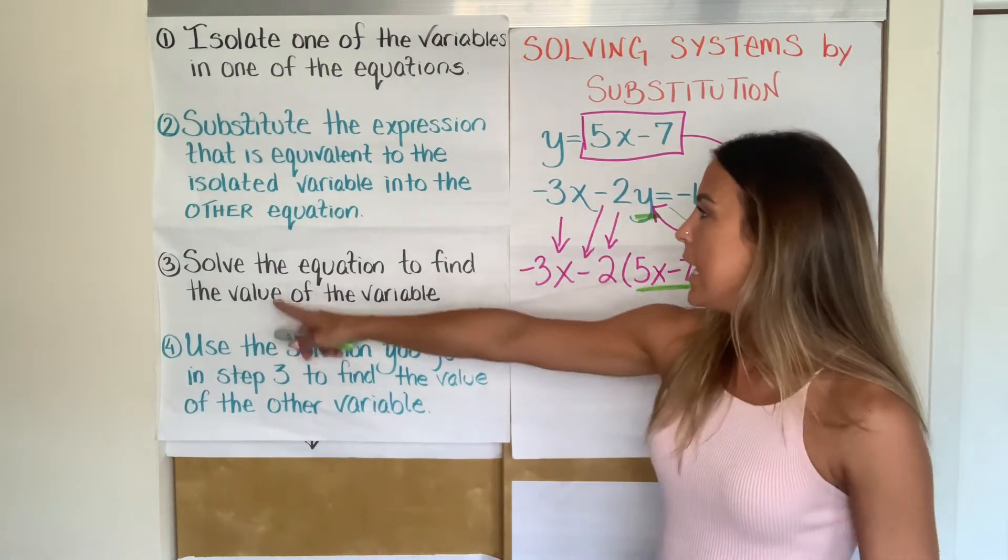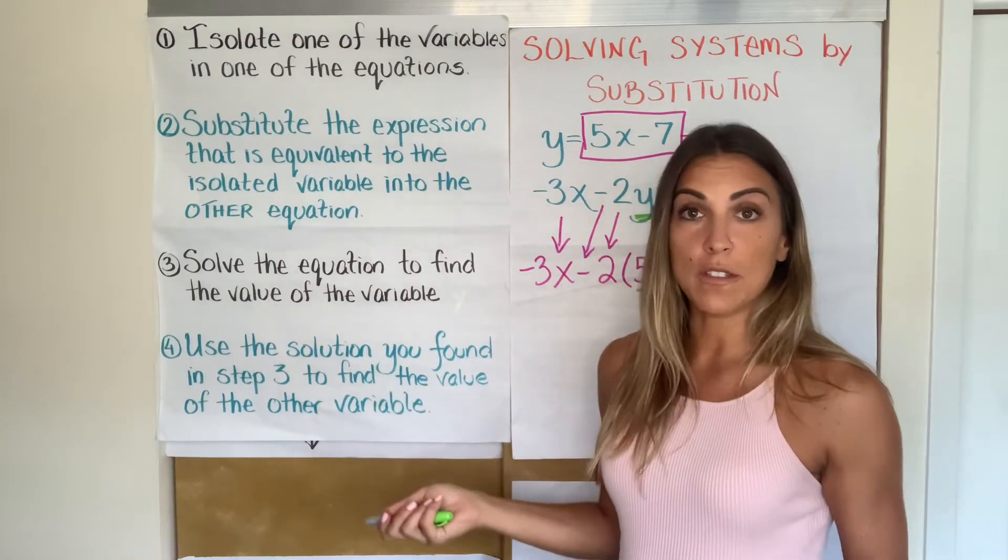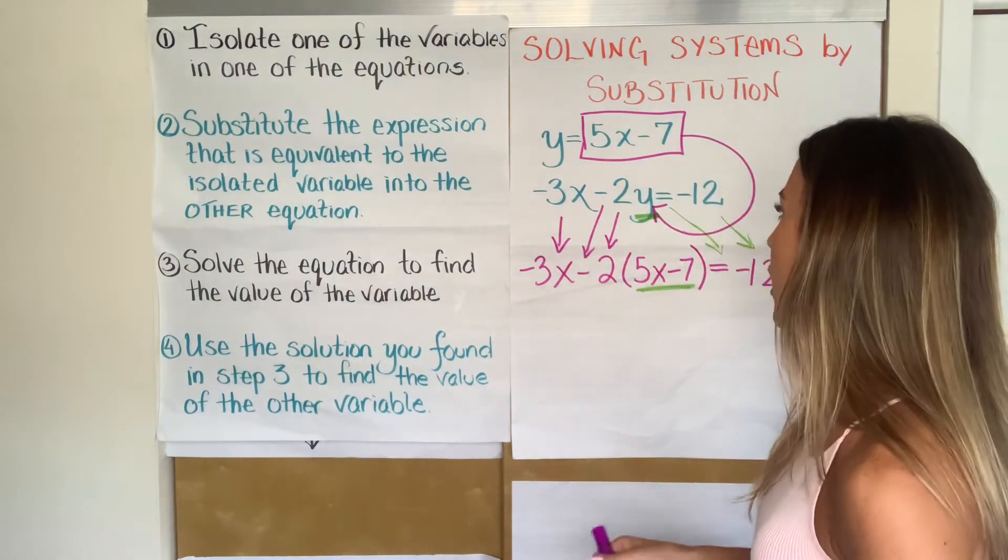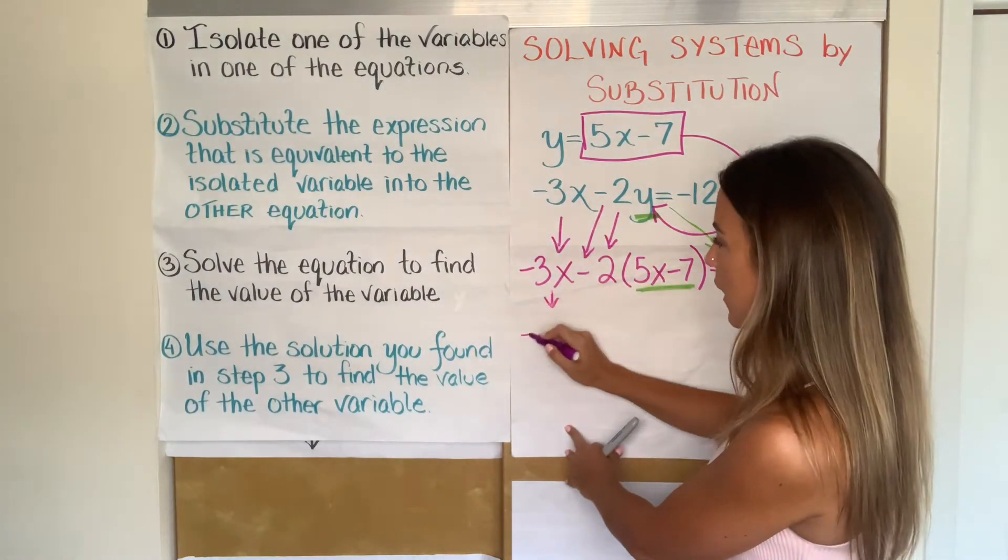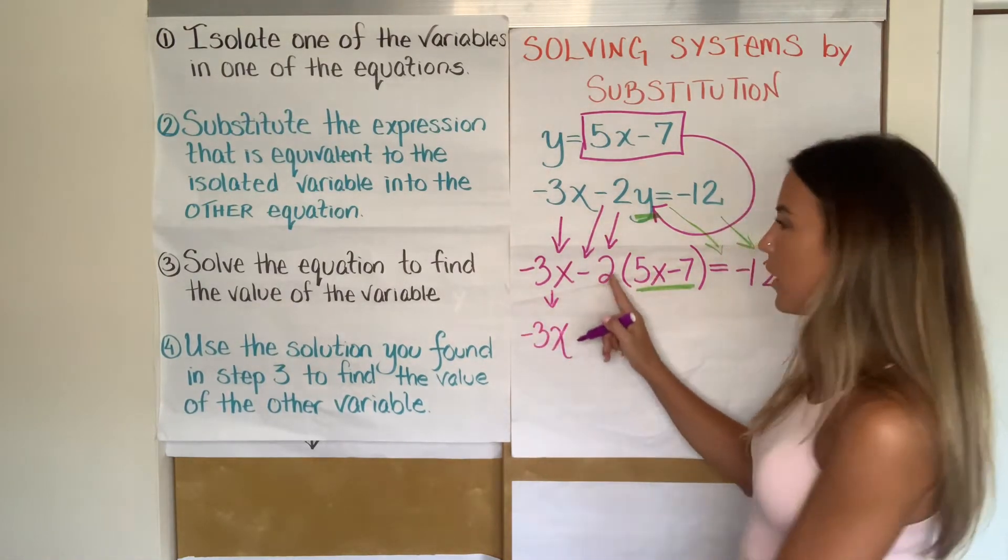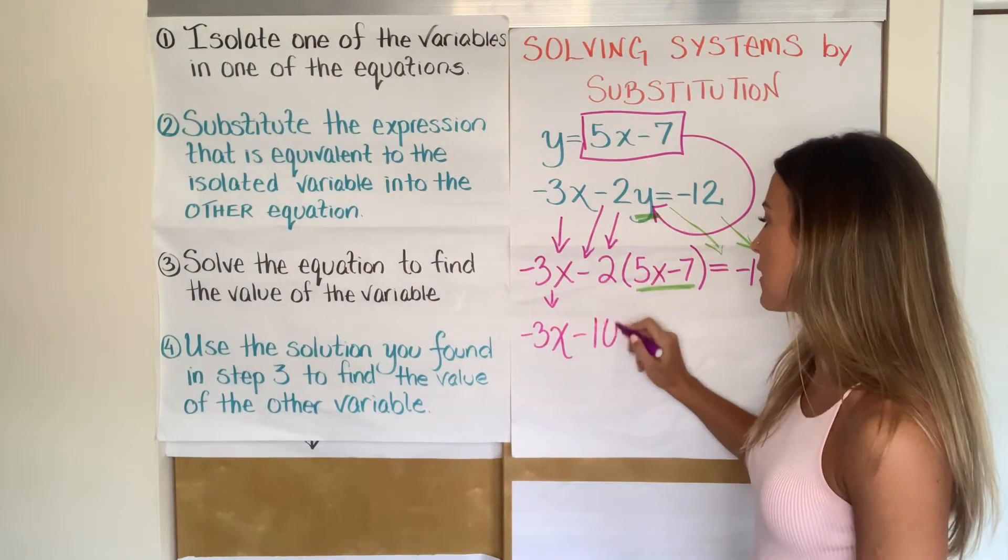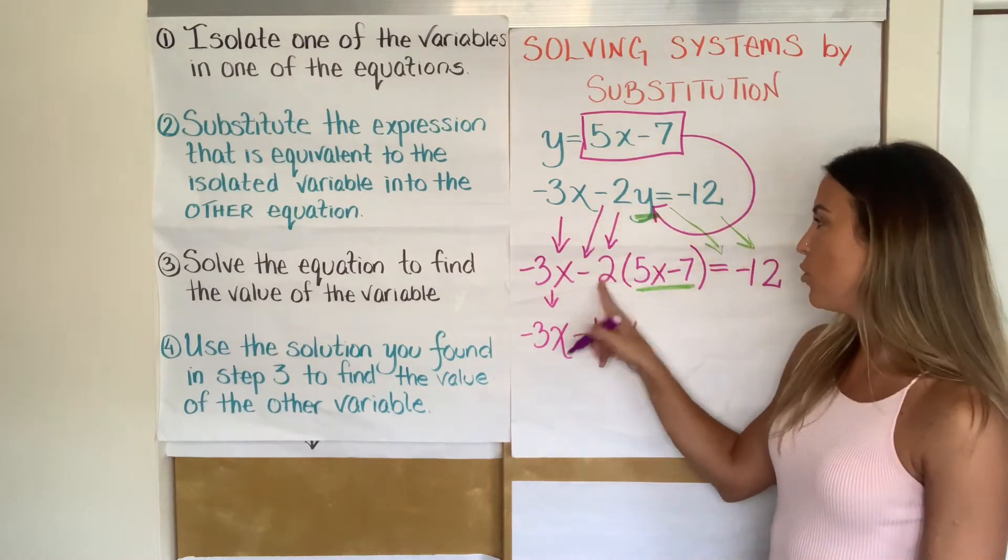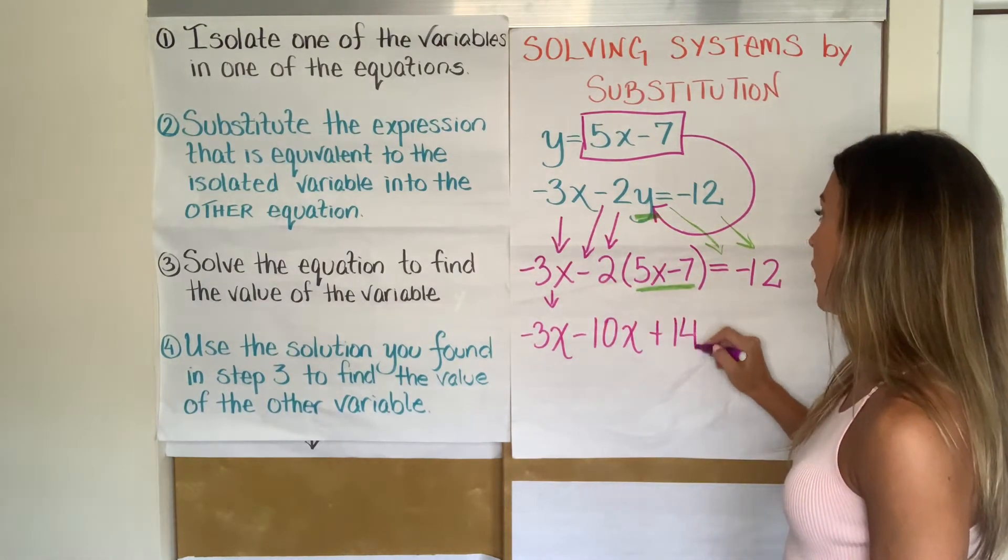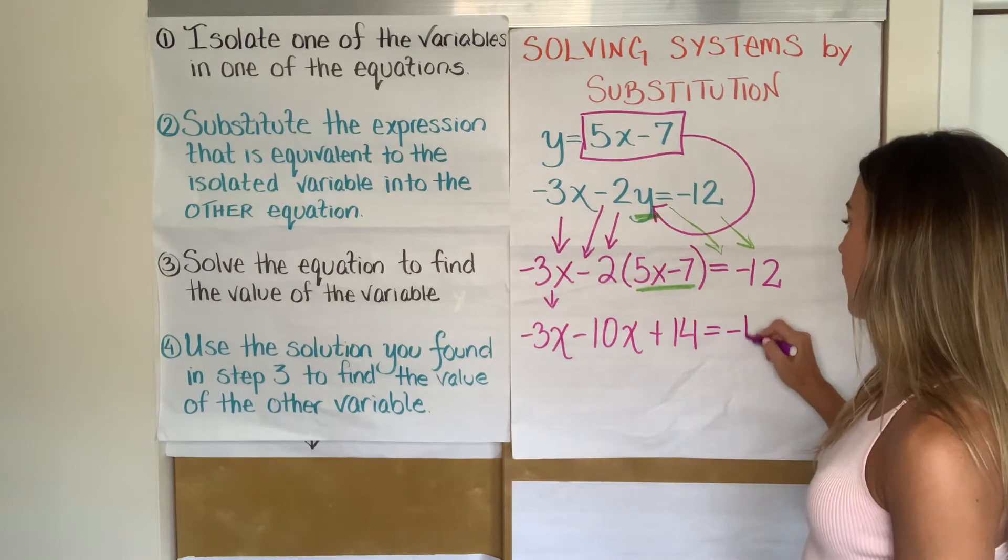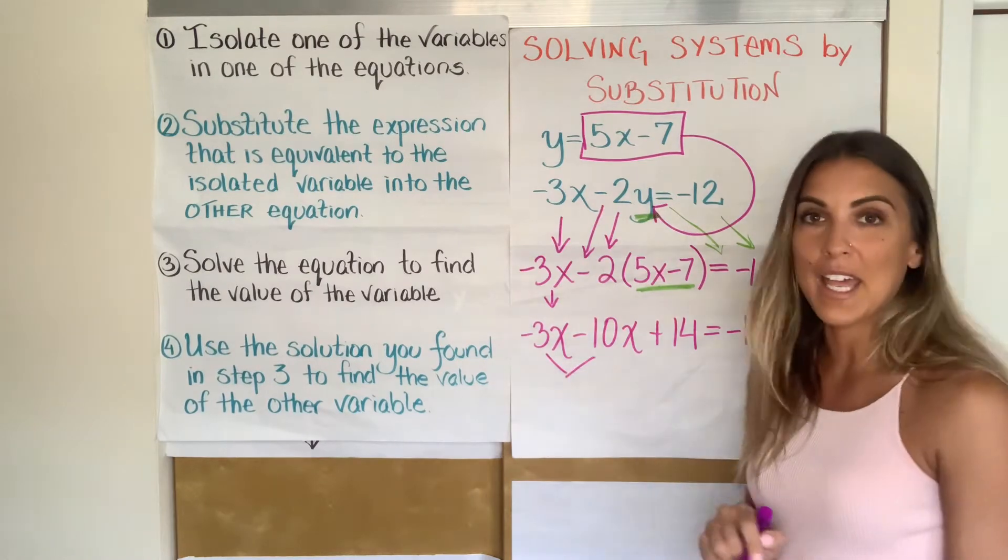Let's look at step three. Solve the equation to find the value of the variable. So now we're just solving equations, which hopefully you already have learned how to do. So I'm going to distribute this negative two out. But before I do, I'm going to bring down that negative 3X. So distributing this negative two, I get negative two times 5X, that's negative 10X. I have negative two times negative seven, that's positive 14. Bring down my equal sign, bring down my negative 12.